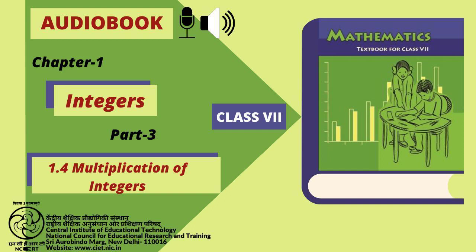We already have 3 multiplied by minus 5 is equal to minus 15. Using such patterns, we also get minus 5 multiplied by 4 is equal to minus 20, which is equal to 5 multiplied by minus 4.